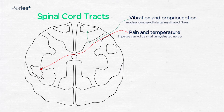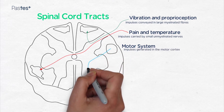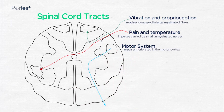The third tract system is the motor system. Impulses are generated in the motor cortex and pass down in white matter tracts through the internal capsule downwards to the brainstem, where they decussate at the level of the medulla, and then they descend in the corticospinal tracts. They exit the spinal cord via the anterior root and synapse with an anterior horn cell, which then gives rise to the motor nerve.